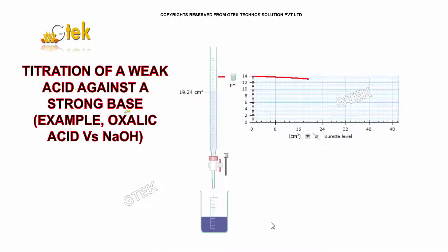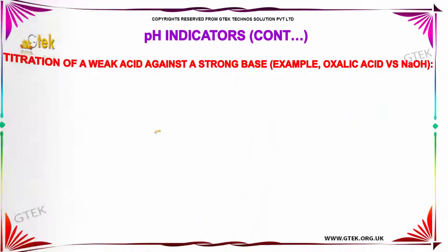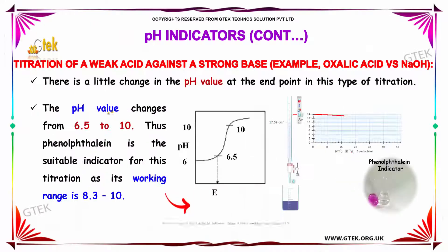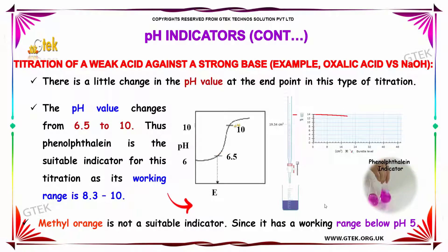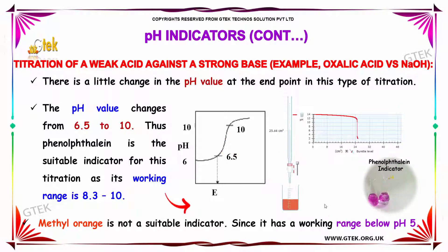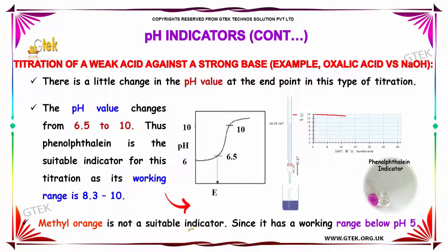For weak acid versus strong base titration, such as oxalic acid versus sodium hydroxide, there is a little change in pH value at the endpoint. The pH value ranges from 6.5 to 10, so phenolphthalein is the suitable indicator, as it works in the range of 8.3 to 10. Methyl orange is not a suitable indicator since its working range is around pH 5.